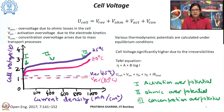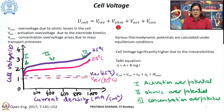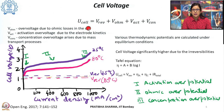Under these conditions, the overall cell voltage is the sum of: the reversible cell voltage, a term arising because of ohmic resistance or losses within the cell, a third term arising because of activation overvoltage, and a last term because of concentration overvoltage. The total cell voltage is a sum of all these voltages.